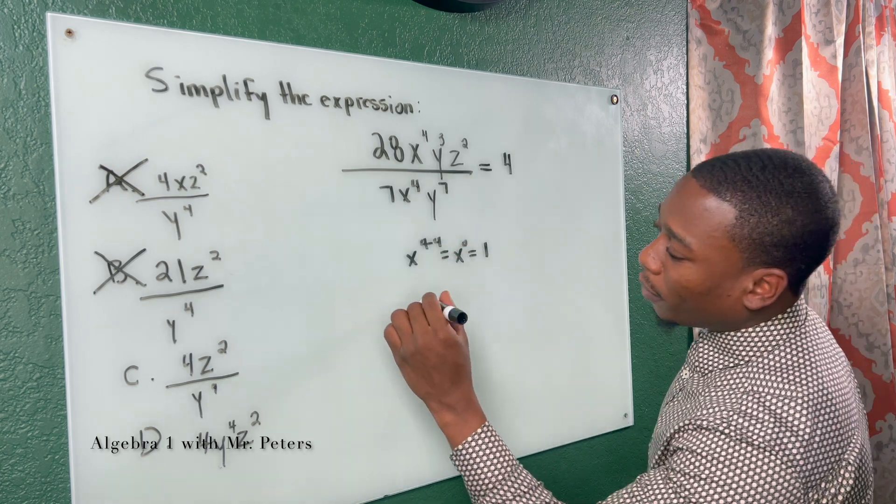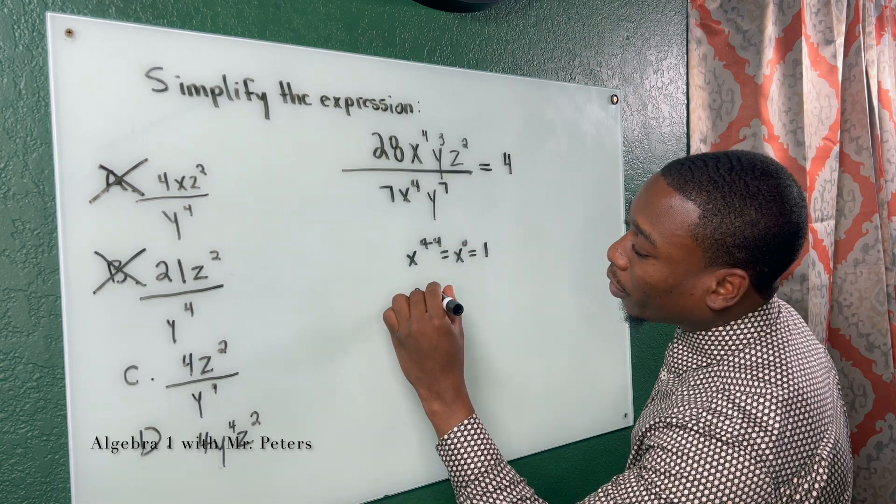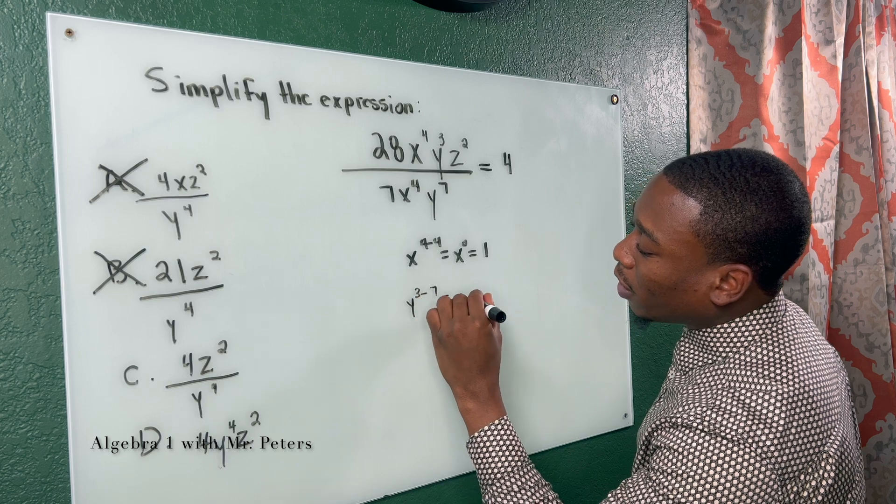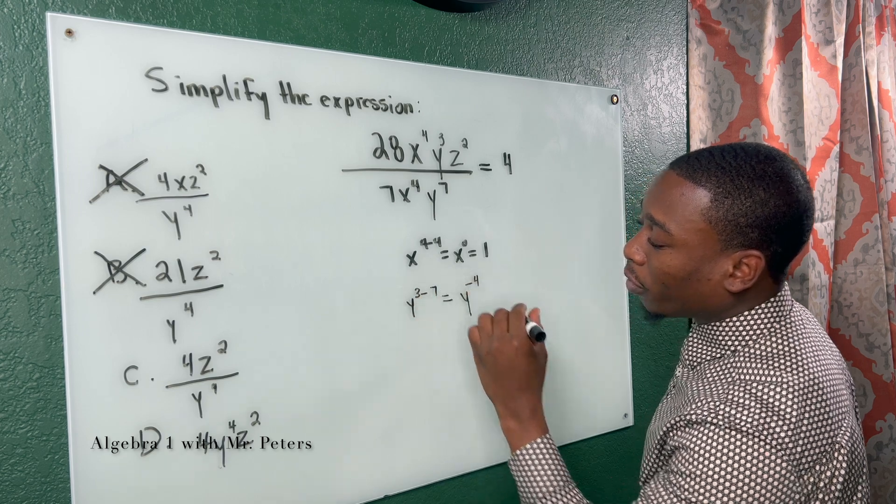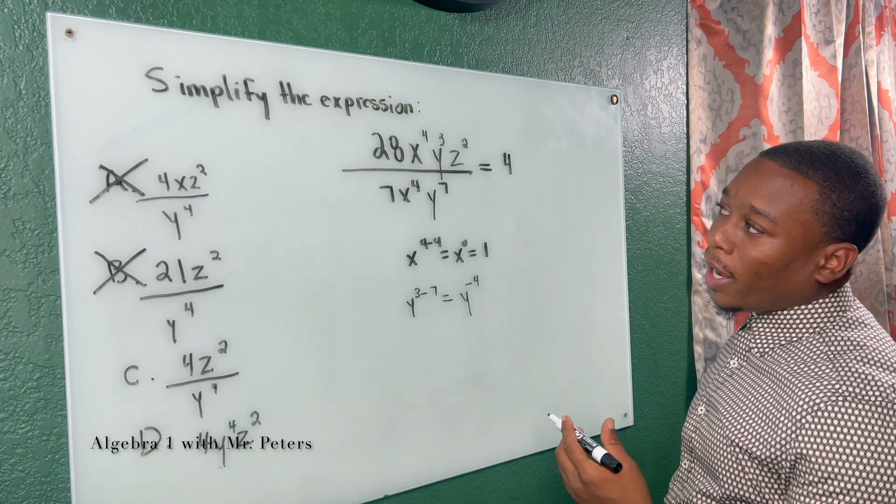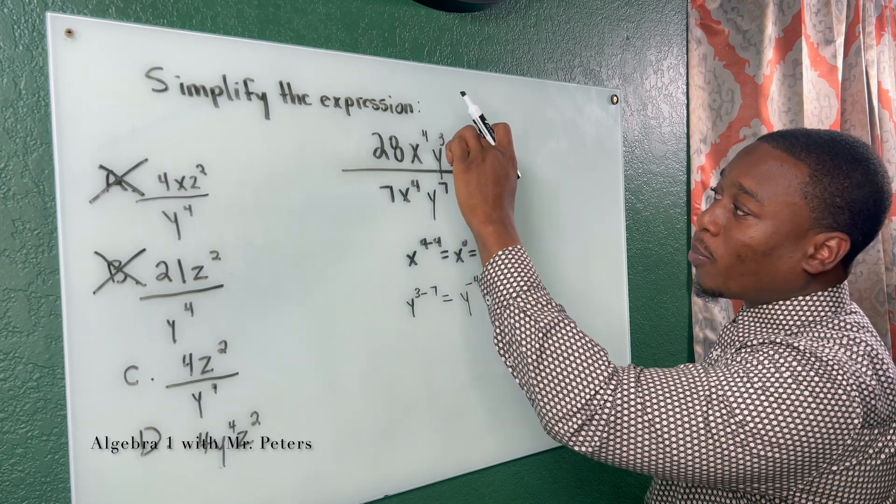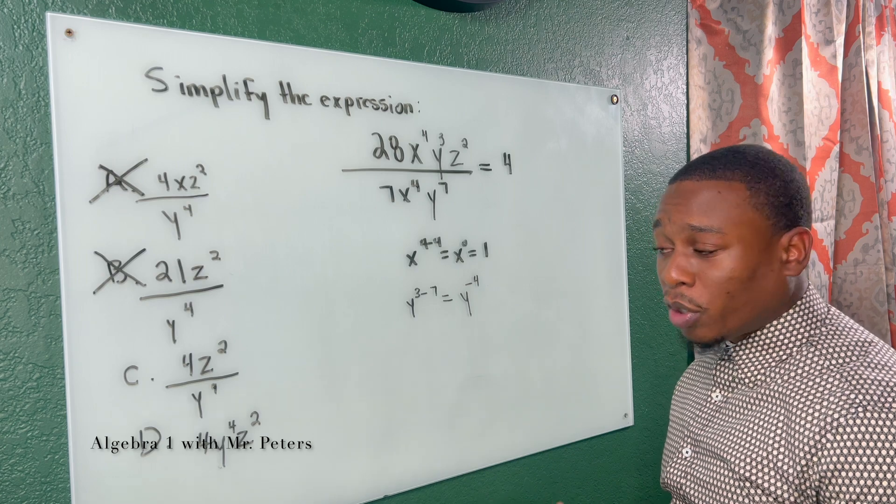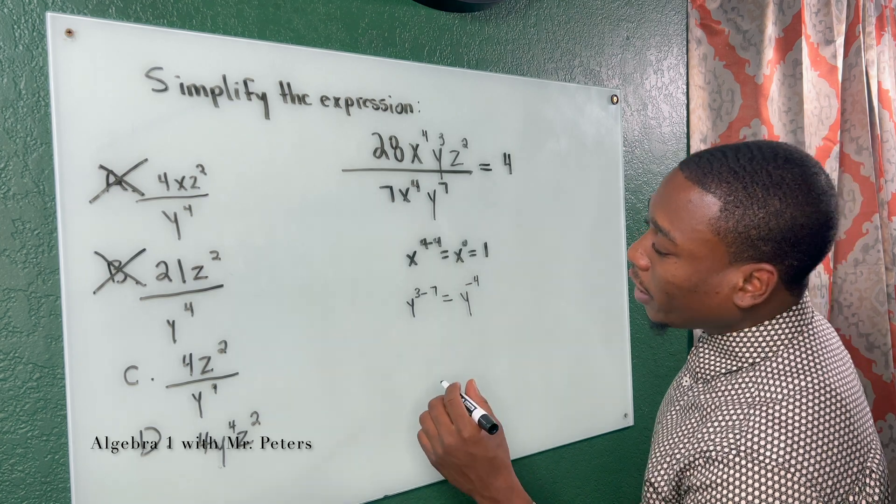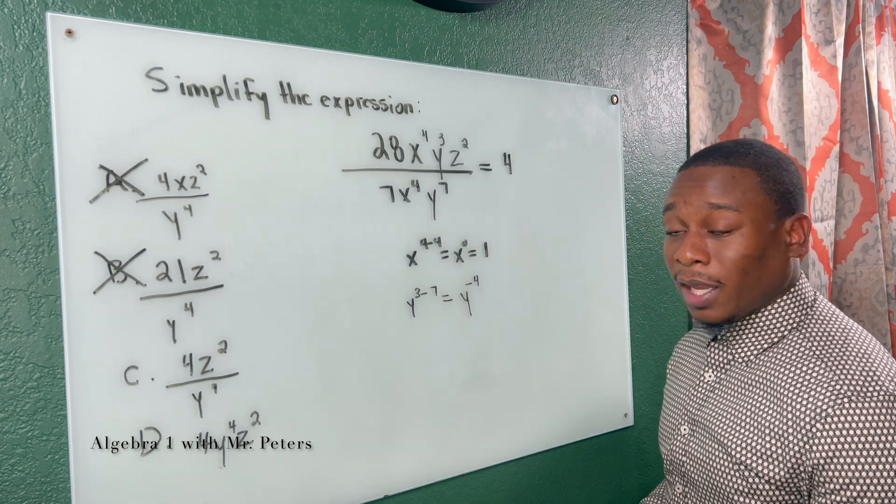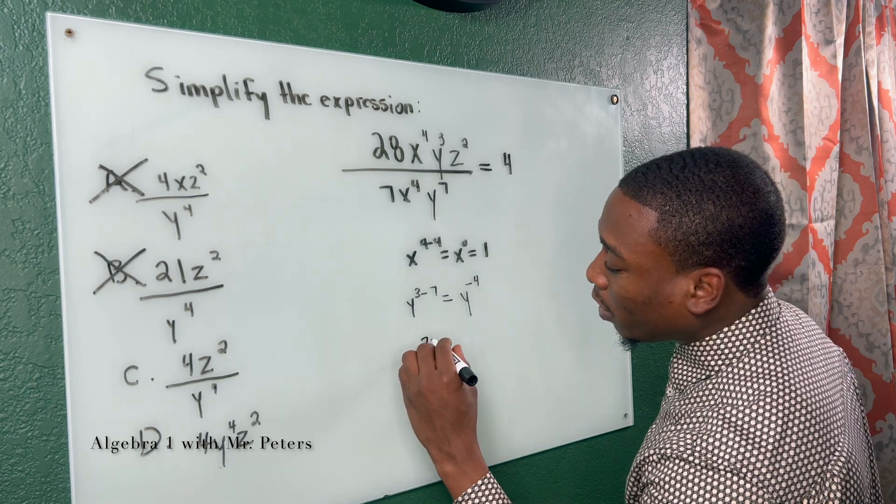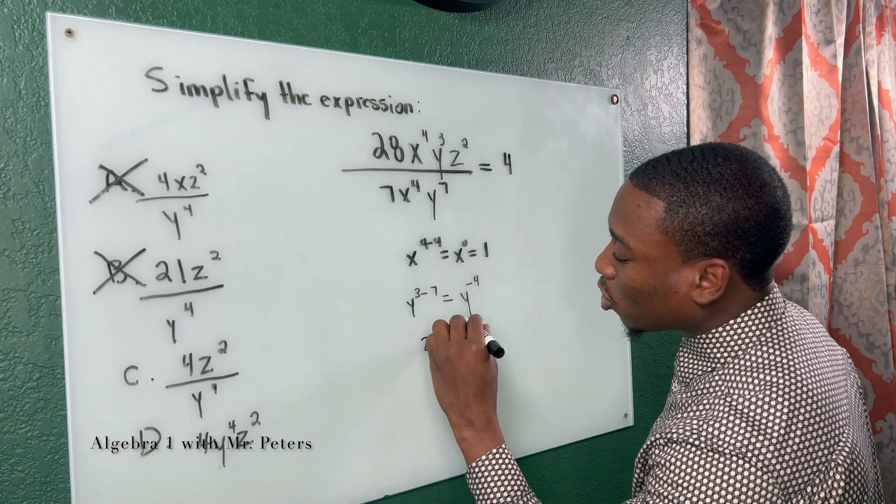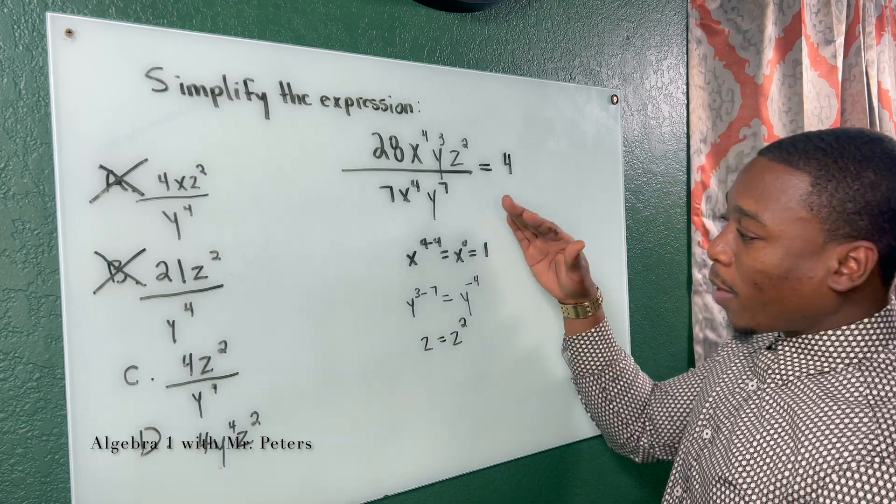Then I go to y. y³ minus y⁷ is going to give me y⁻⁴. So I already know that y is probably not going to be in the top part of this fraction. It's going to be in the bottom because of that negative exponent rule. And then when we go to z, z stays the same. So z is going to be equal to z².